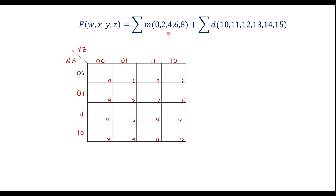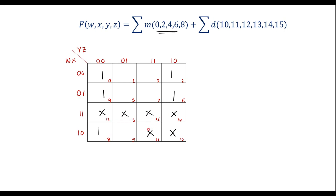Now, these are the cell numbers where we have to write 1, and these are the don't cares where we have to write don't cares. In cell numbers 0, 2, 4, 6, and 8 we write 1. In cells 10, 11, 12, 13, 14, and 15 we write don't cares. By default, in all other cells the values are 0.